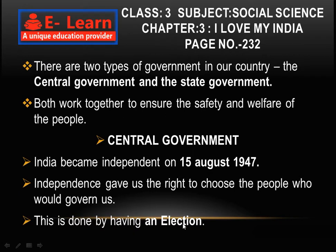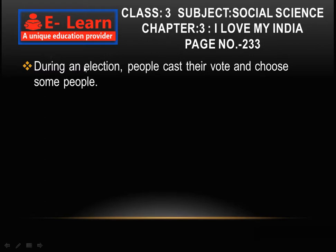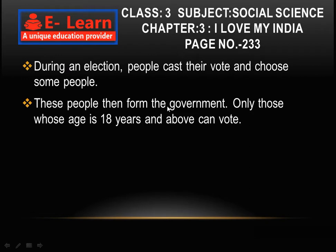This is done by having an election. During an election, people cast their vote and choose some people. These people then form the government. Only those whose age is 18 years and above can vote.